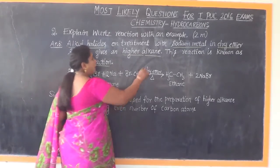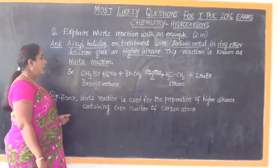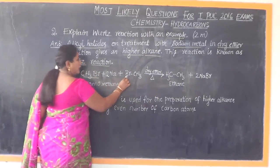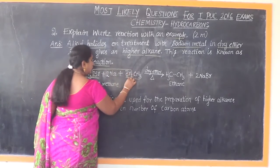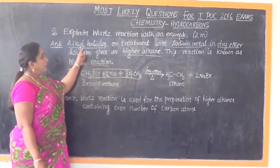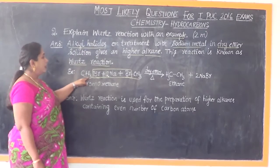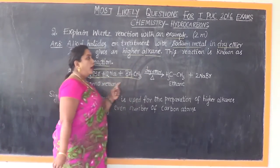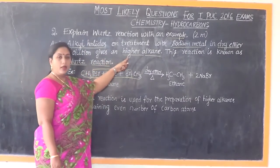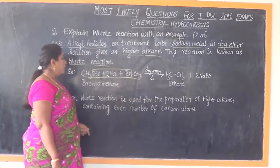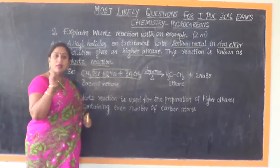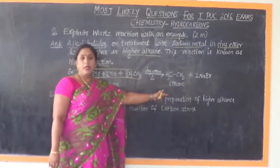This question also asks us to give an example. Here we take the example of bromomethane as the alkyl halide. Two similar molecules of bromomethane are treated with metallic sodium in presence of dry ether, fulfilling all conditions: similar alkyl halide molecules, sodium metal, and dry ether. The result is a higher alkane — ethane — along with sodium bromide salt. This reaction fulfills the conditions of Wurtz reaction and we obtain ethane as per the reaction.